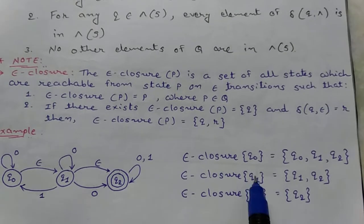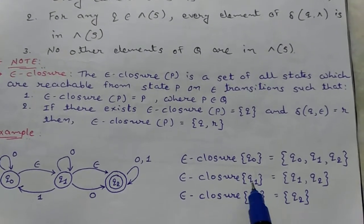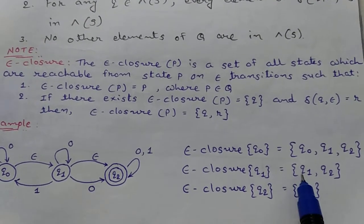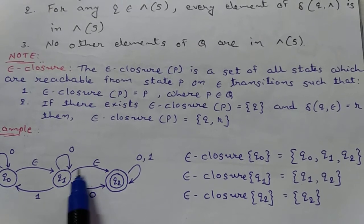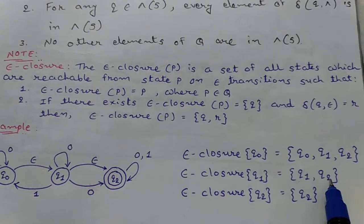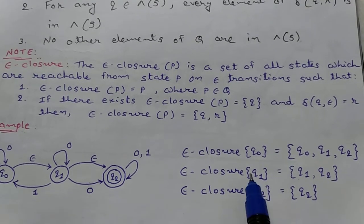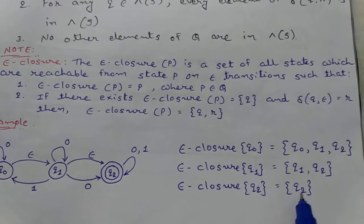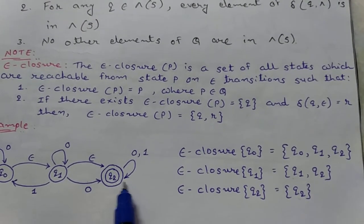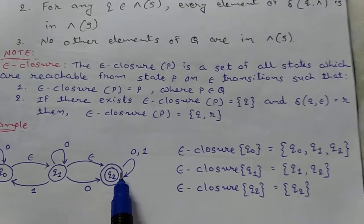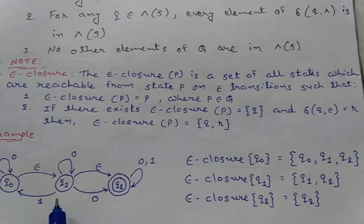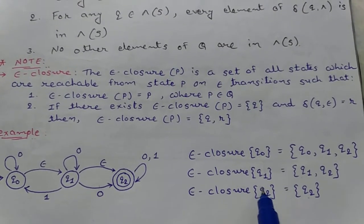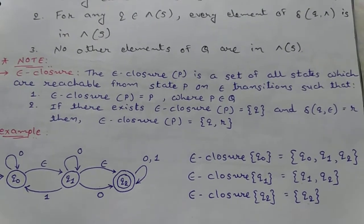Next, epsilon closure of q2. First put q2 itself. Then, being at q2 using epsilon transition, do you reach any state? In this case, I do not reach any state. So epsilon closure of q2 is equal to {q2}. Thank you.